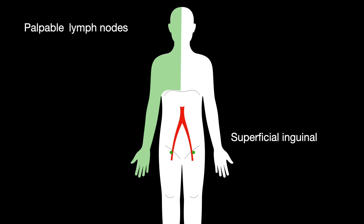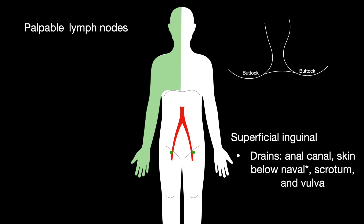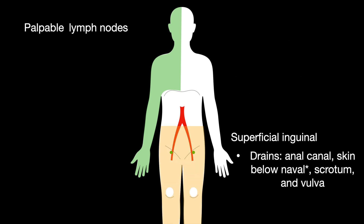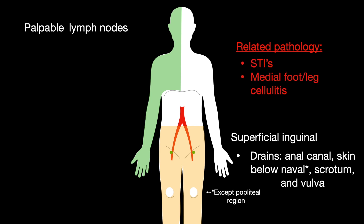The superficial inguinal lymph nodes drain the anal canal below the pectinate line, skin below the navel, scrotum, and vulva. It does not drain the popliteal region. Related pathology includes sexually transmitted infections and medial foot and leg cellulitis.